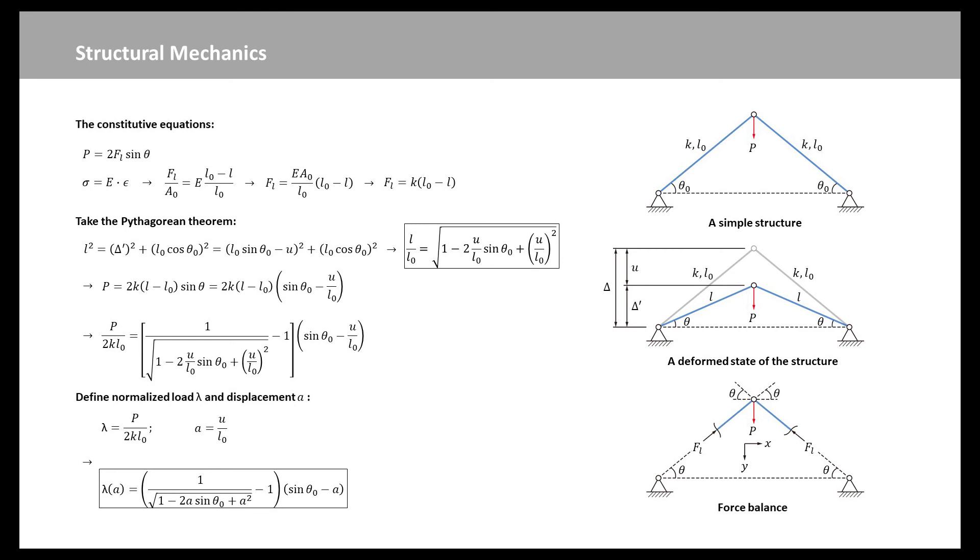Where K is a measure of each member's stiffness. Now, we only have to determine the geometric equations that would relate the hinge's displacement with the initial and deformed lengths of the truss members. We expect the geometric equation to be nonlinear as a result of the preliminary assumption that the displacement can be arbitrarily large. Based on this figure, we take the Pythagorean theorem and obtain the geometric equation.